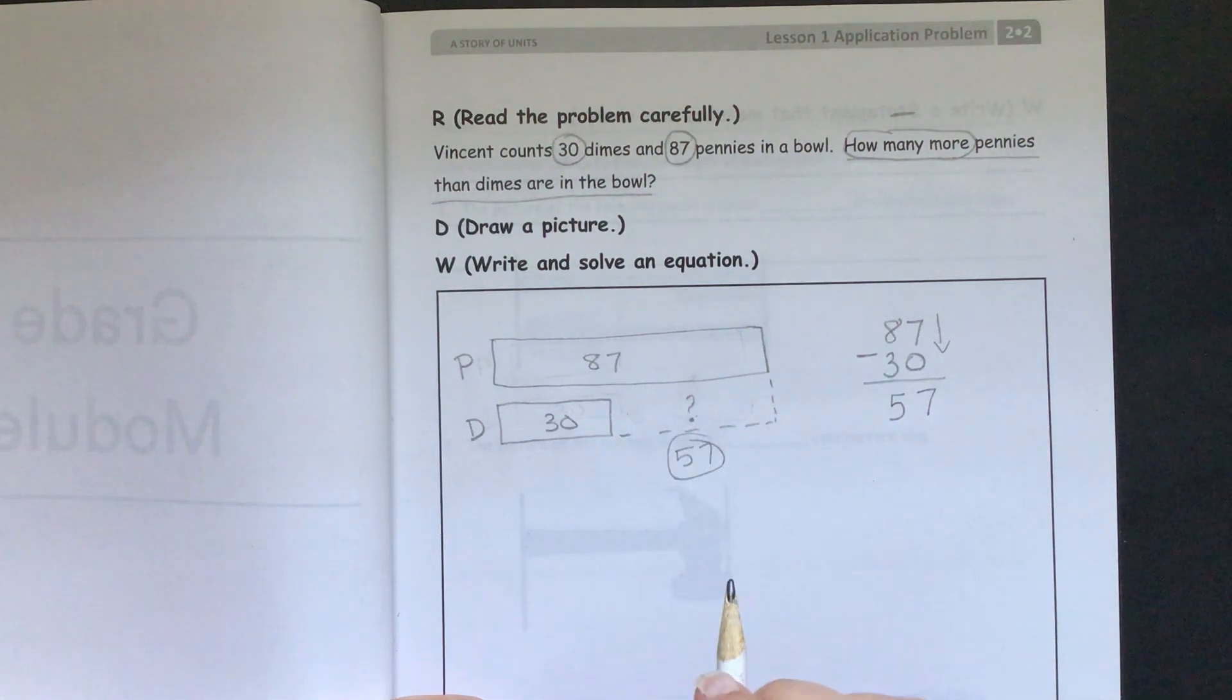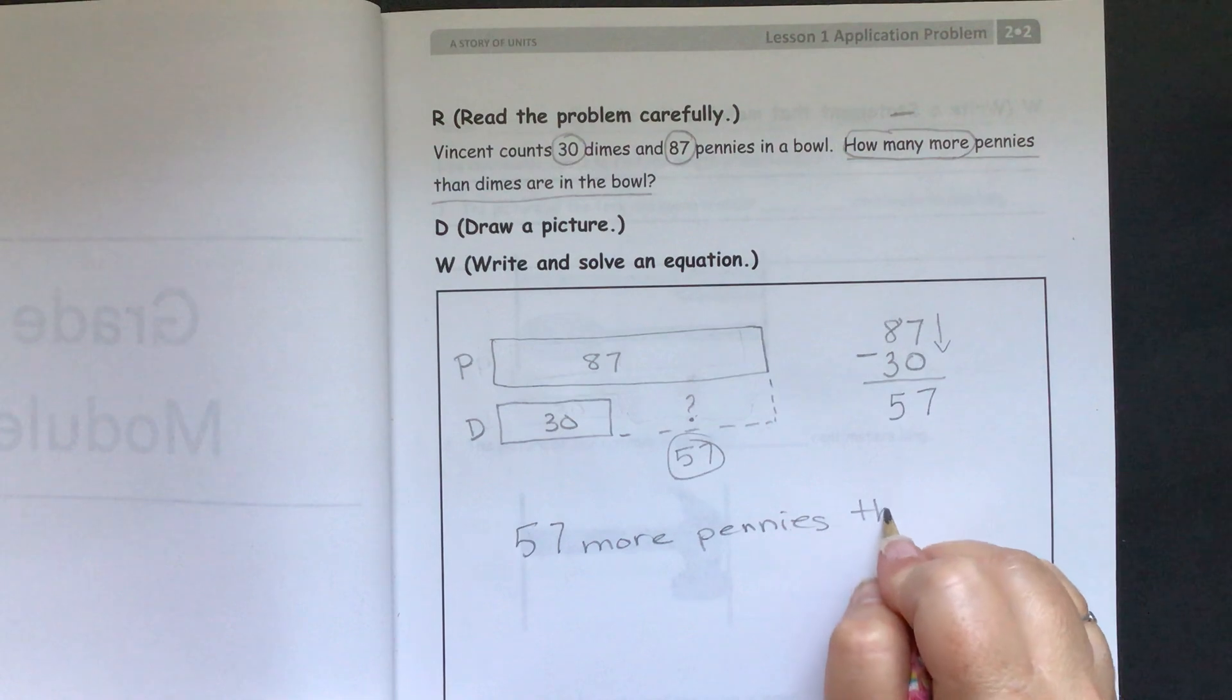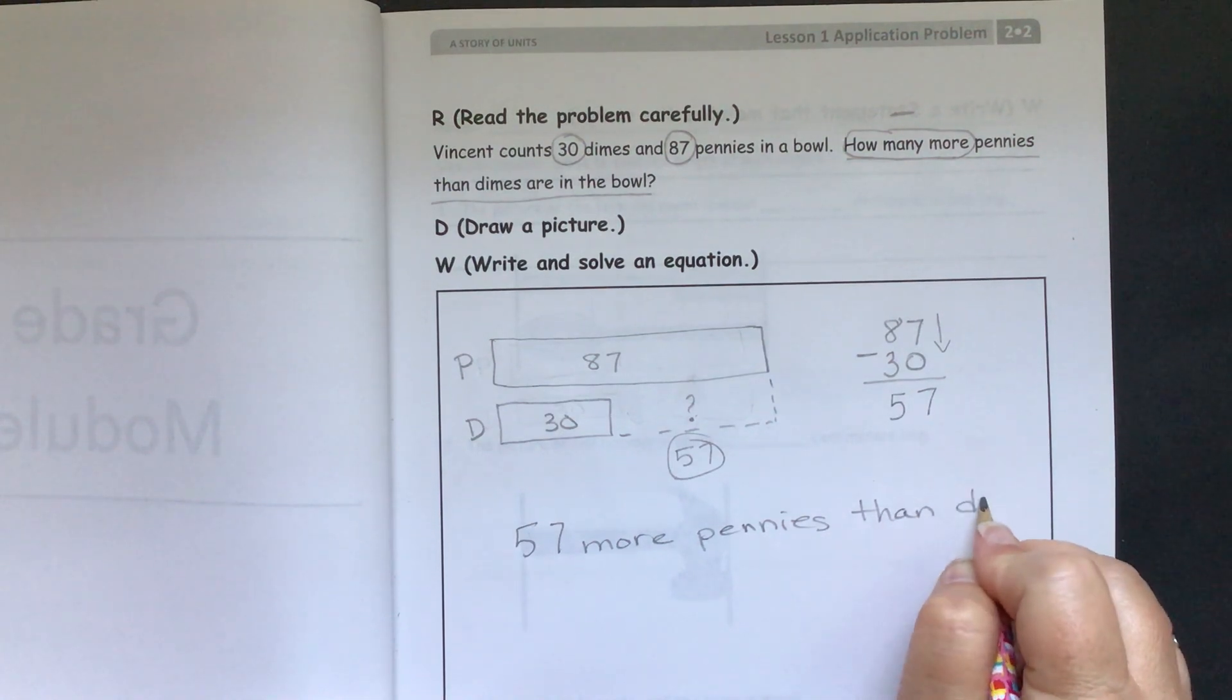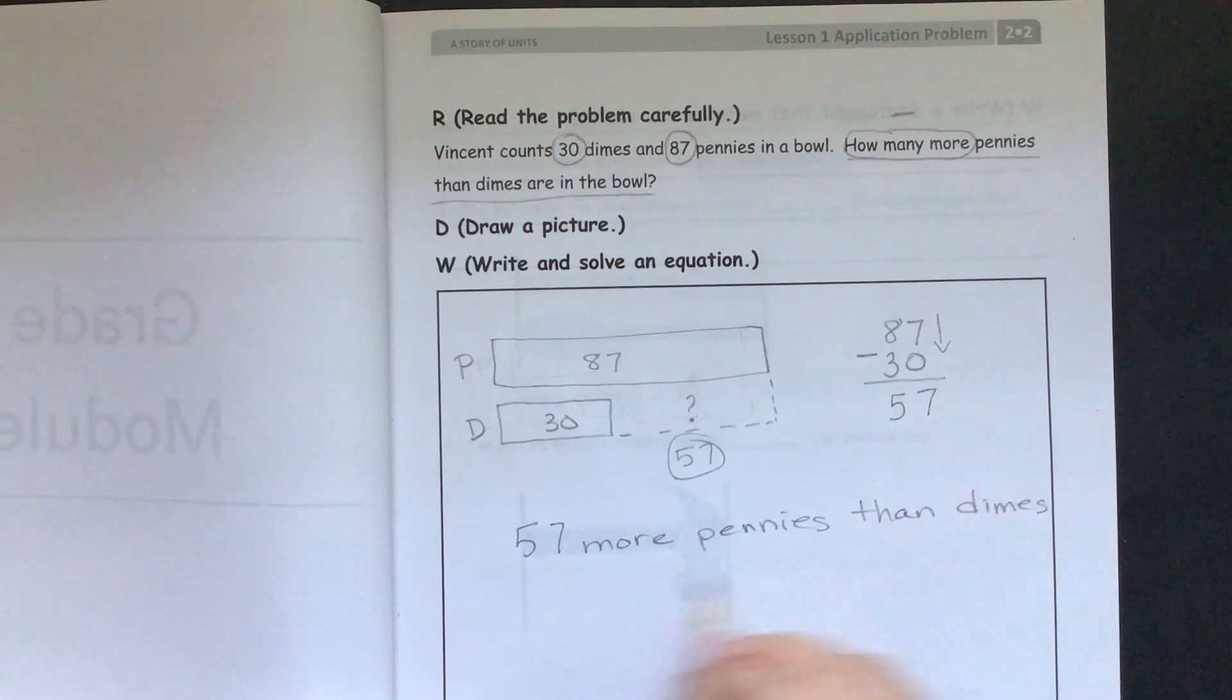So we need to write our sentence to answer our question. Our question again is, how many more pennies than dimes are in the bowl? So we can say 57 more pennies than dimes are in the bowl.